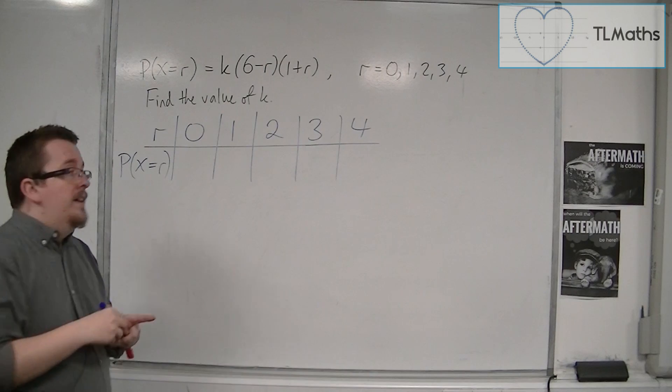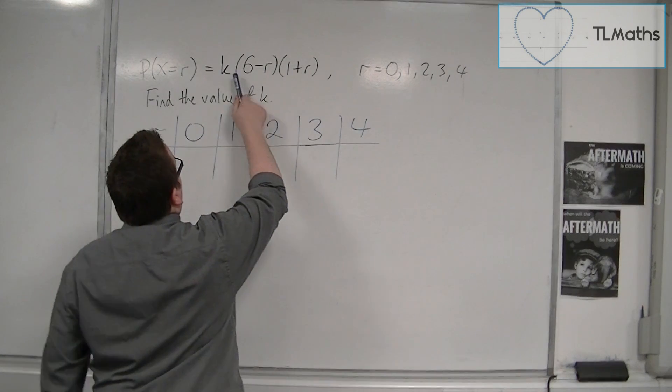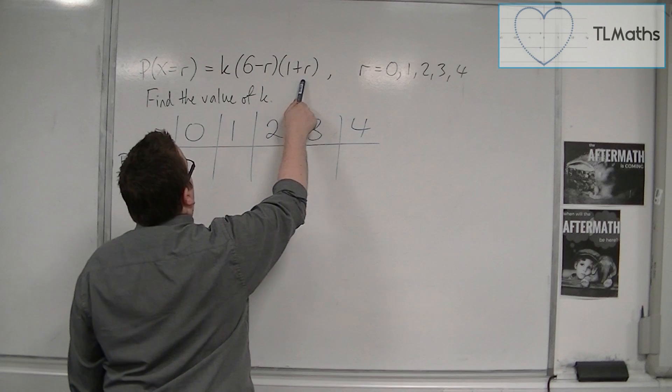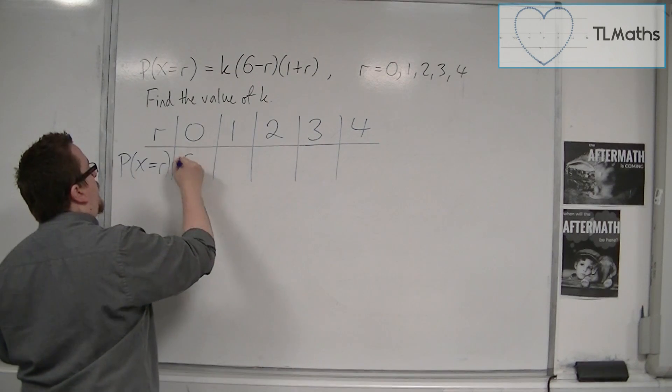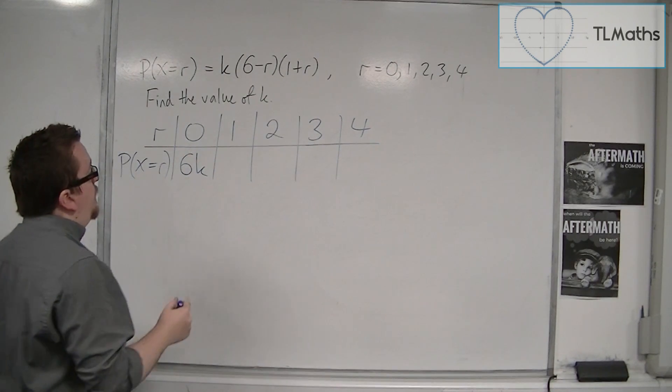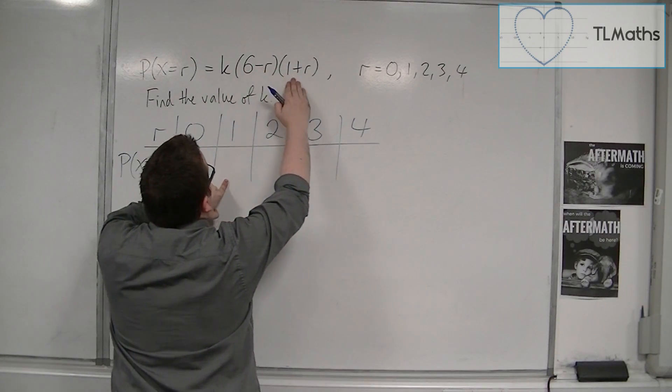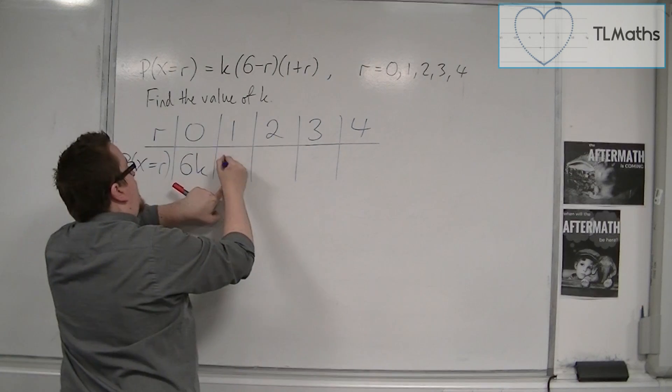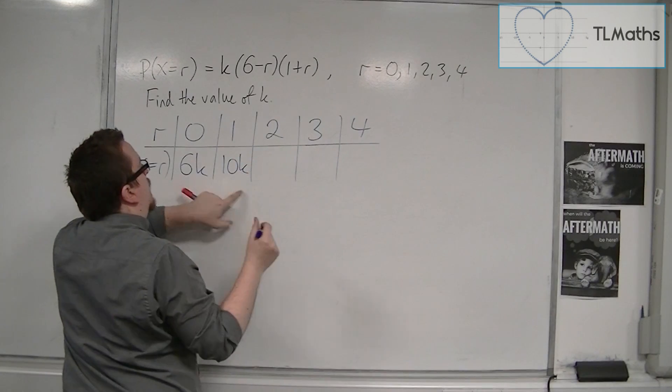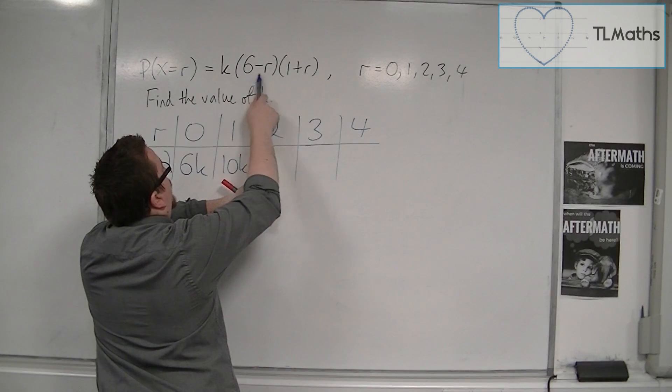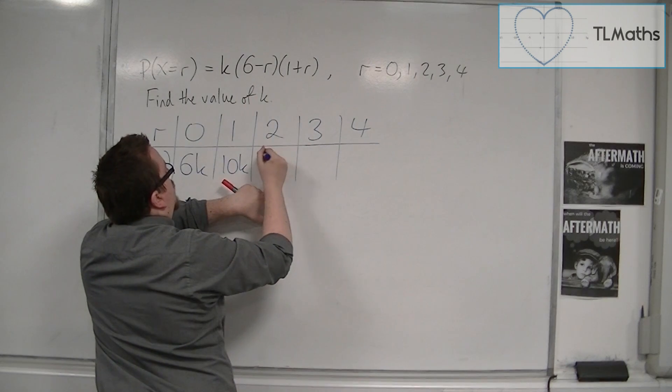So when r is 0, we have k times 6 times 1, so we just have 6k. When r is 1, we have k times 5 times 2, so we'd have 10k. When r is 2, we're going to have k times 4 times 3, so 12k.